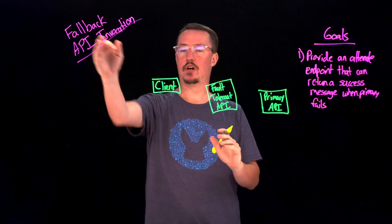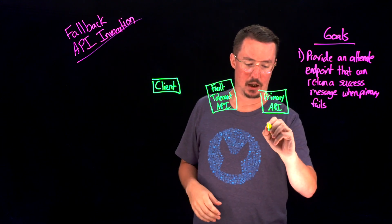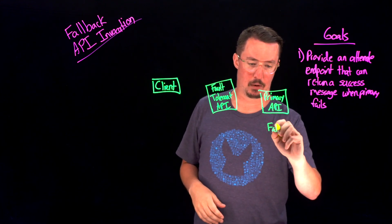But as we say here, we've got a fallback API as well. So we're going to have a secondary API that we're going to call in case that primary one fails.